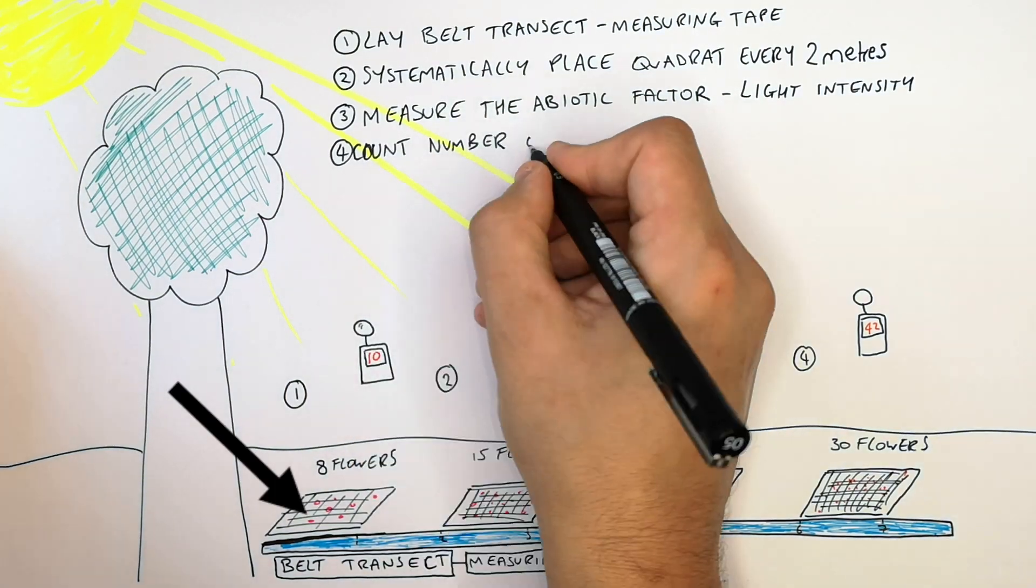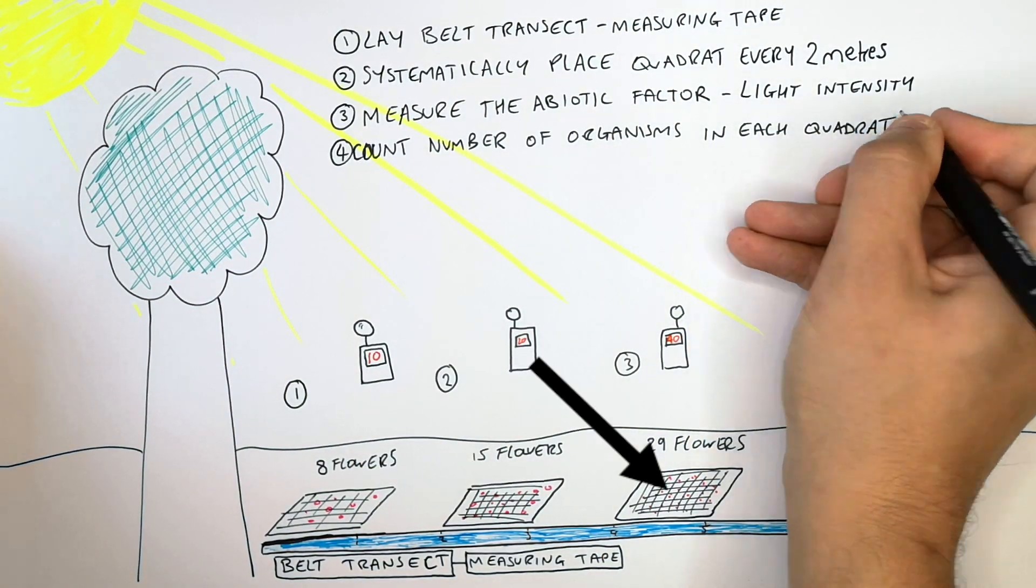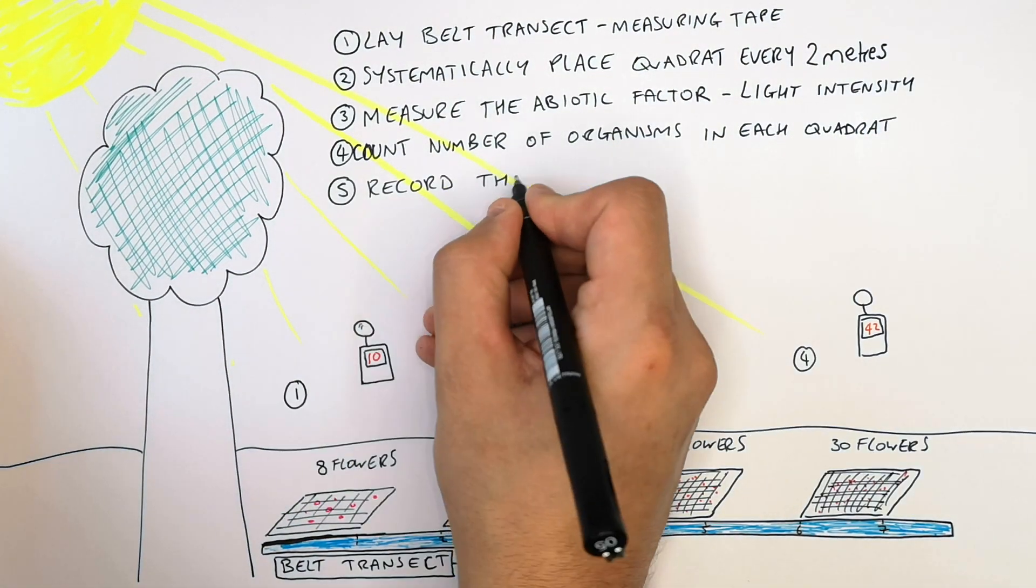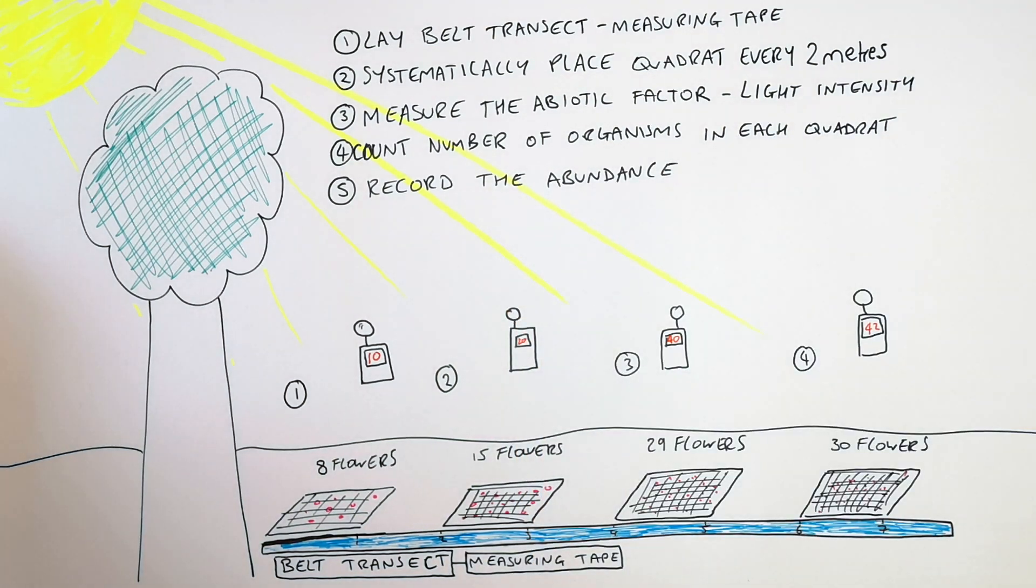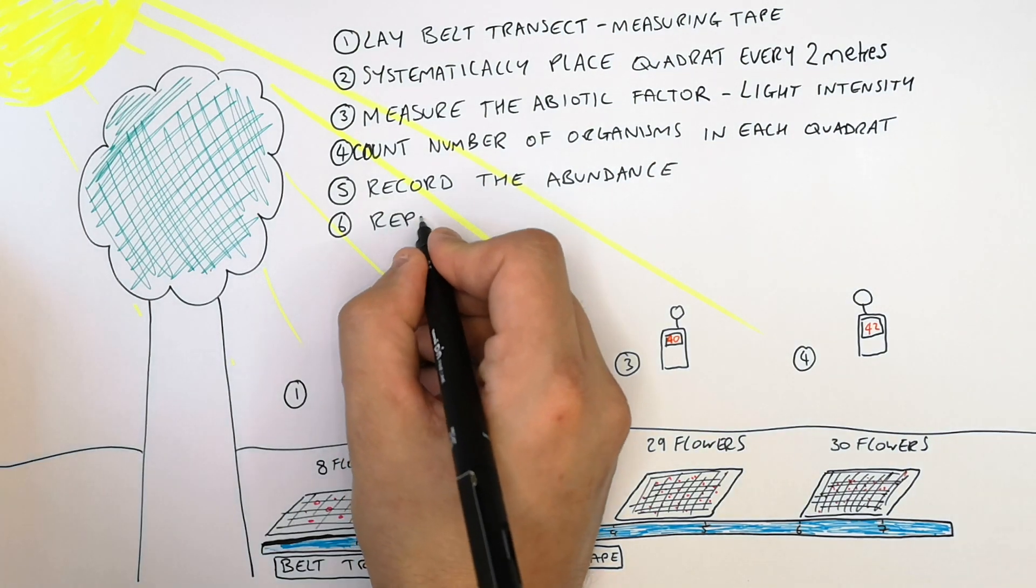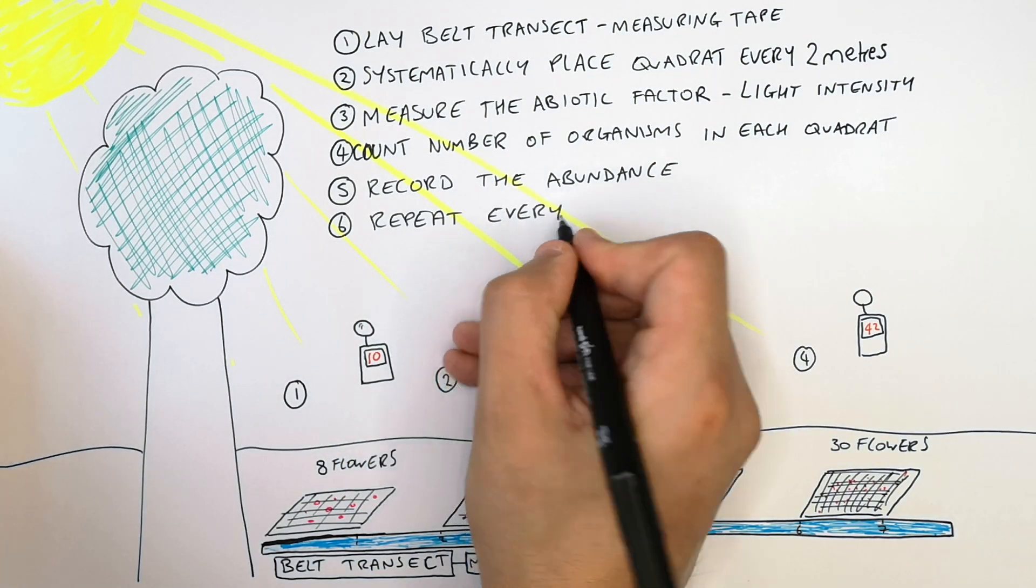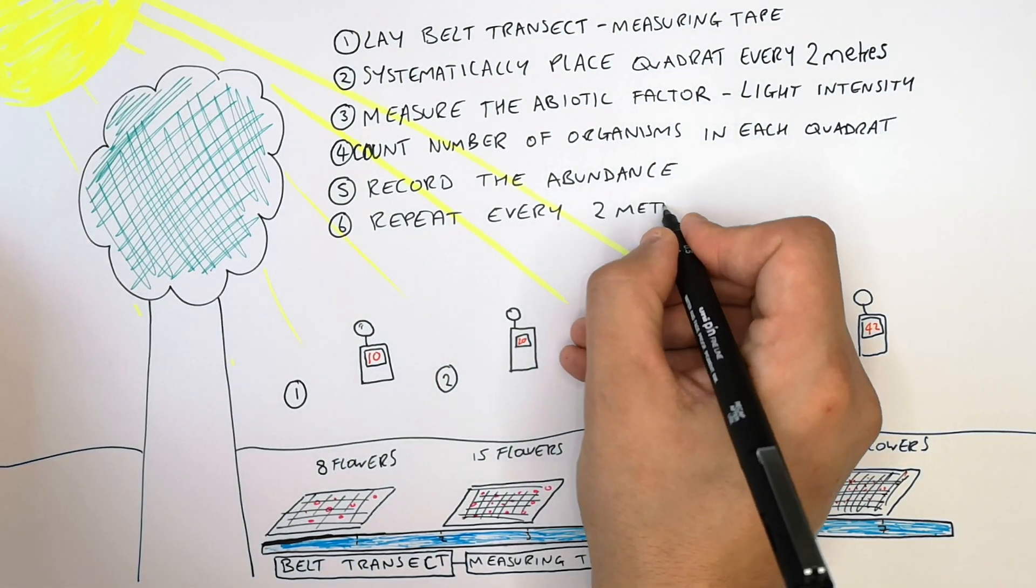Then count the number of organisms in each quadrat. You record the abundance in the quadrat. You then lay the quadrat at regular intervals along the belt transect. In our case it was every 2 metres.